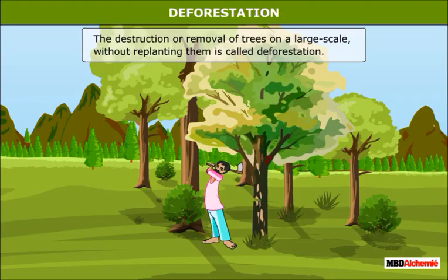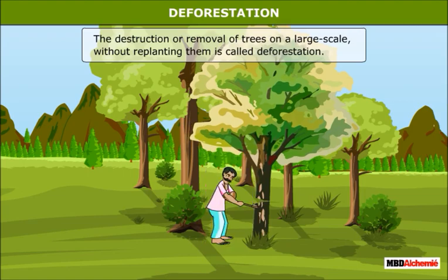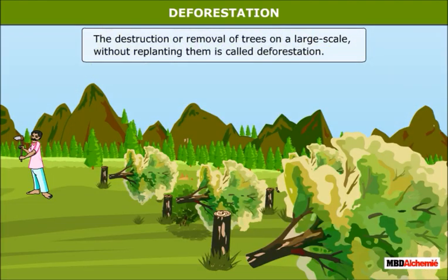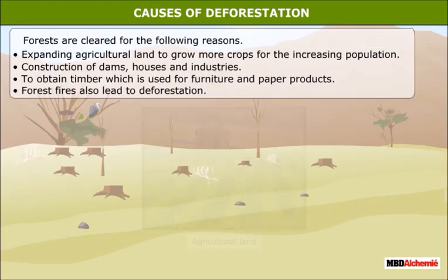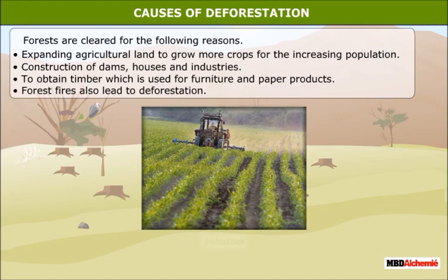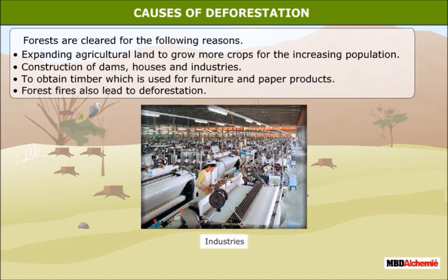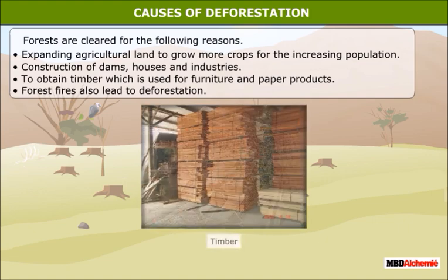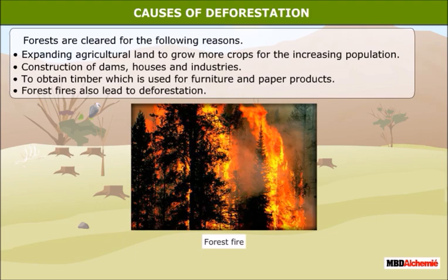Deforestation: Cutting down trees on a large scale without replanting them is called deforestation. There are many causes of deforestation, such as expanding agricultural land to grow more crops for the increasing population. Forests are cleared for construction of factories and industries. Forests are cut to obtain timber which is used for building materials, furniture and paper products. Forest fires also lead to deforestation.